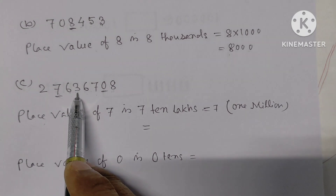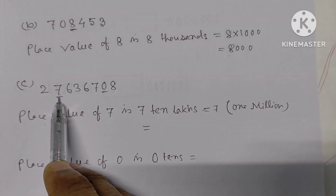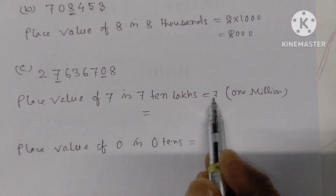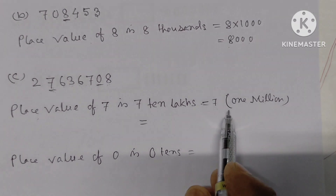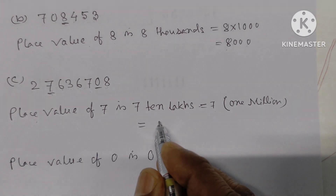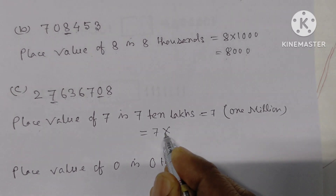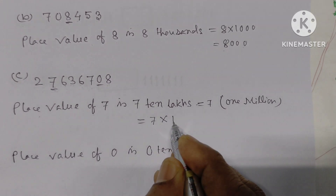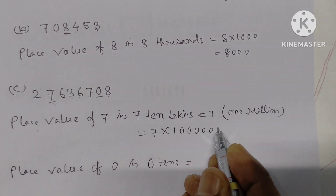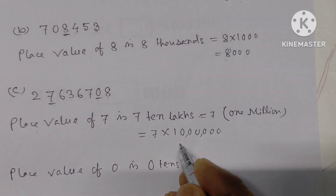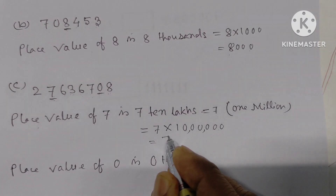This 7 is in the ten-lakhs place. That means its place value is 7 into 10,00,000, which equals 70,00,000 — that is 70 lakhs.